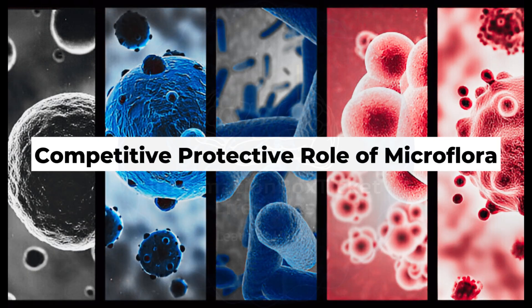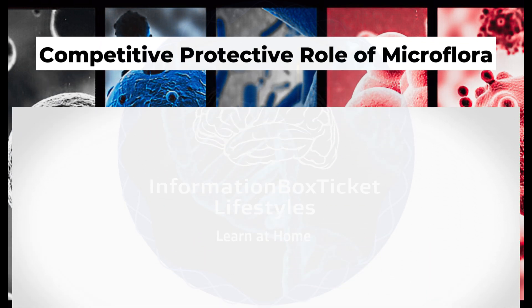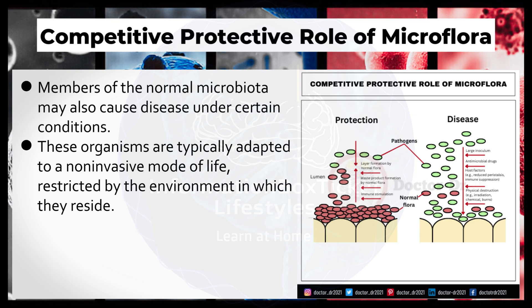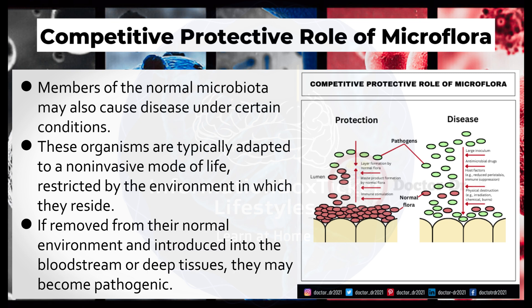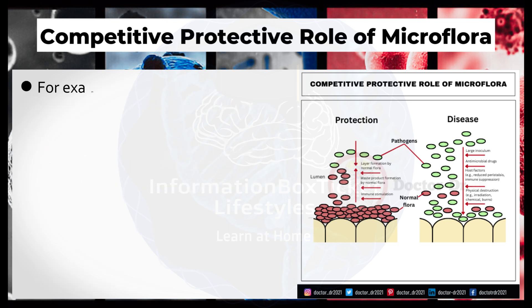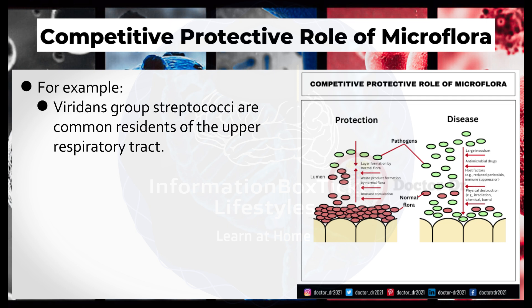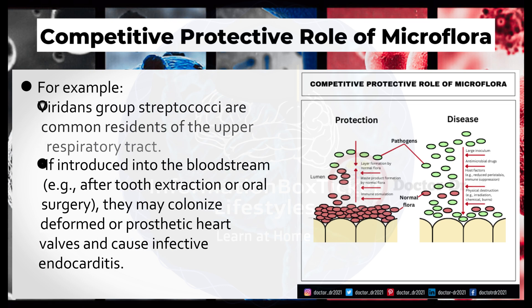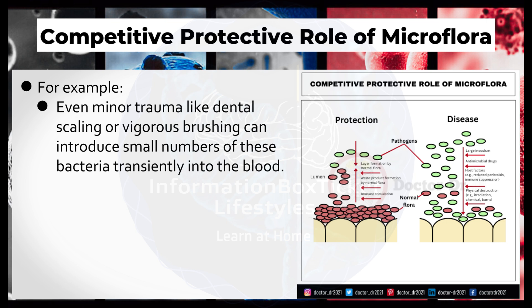Competitive, protective role of microflora. Members of the normal microbiota may also cause disease under certain conditions. These organisms are typically adapted to a non-invasive mode of life, restricted by the environment in which they reside. If removed from their normal environment and introduced into the bloodstream or deep tissues, they may become pathogenic. For example, viridans group streptococci are common residents of the upper respiratory tract. If introduced into the bloodstream, e.g., after tooth extraction or oral surgery, they may colonize deformed or prosthetic heart valves and cause infective endocarditis. Even minor trauma like dental scaling or vigorous brushing can introduce small numbers of these bacteria transiently into the blood.